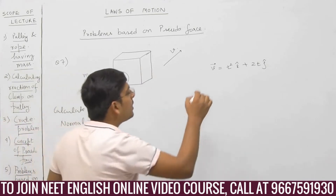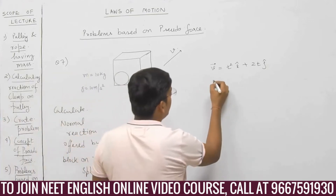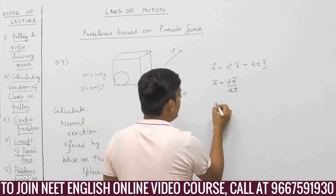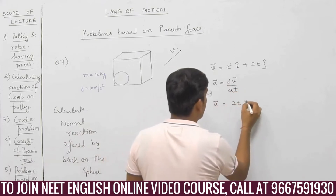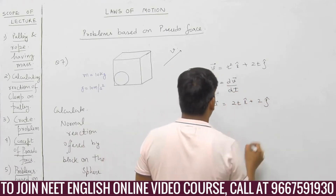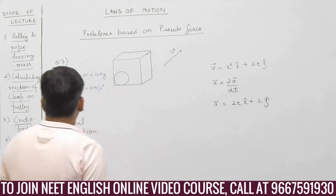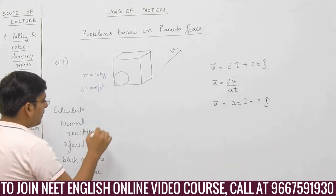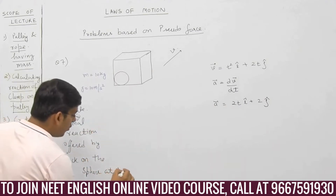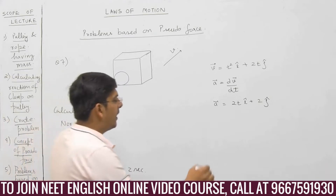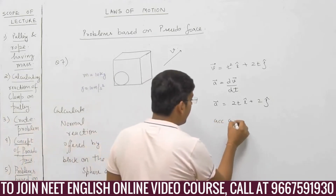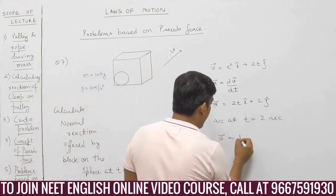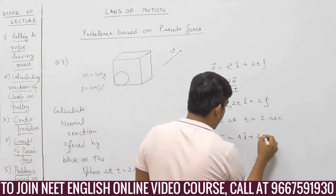I am not interested in velocity; rather I am interested in acceleration. Acceleration equals dV/dt — this becomes 2t î + 2 ĵ. We also need the time. Calculate normal reaction offered by block on this sphere at t = 2 seconds. Acceleration at t = 2 seconds is 4î + 2ĵ.